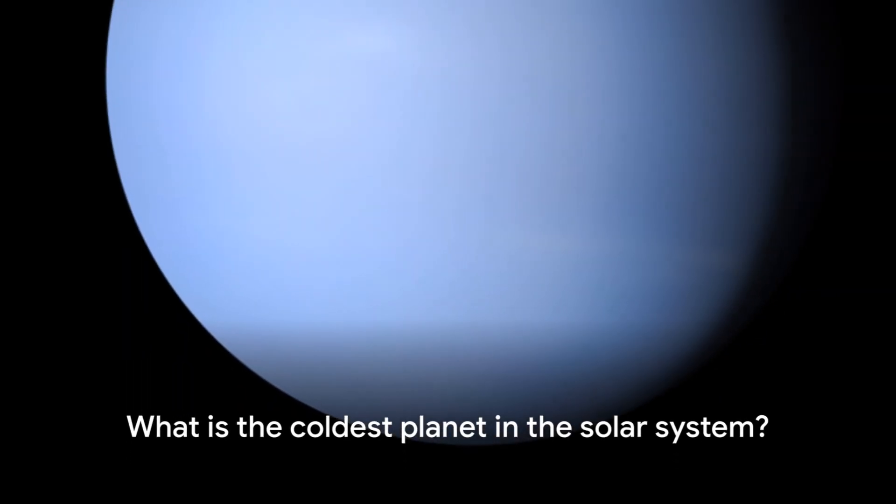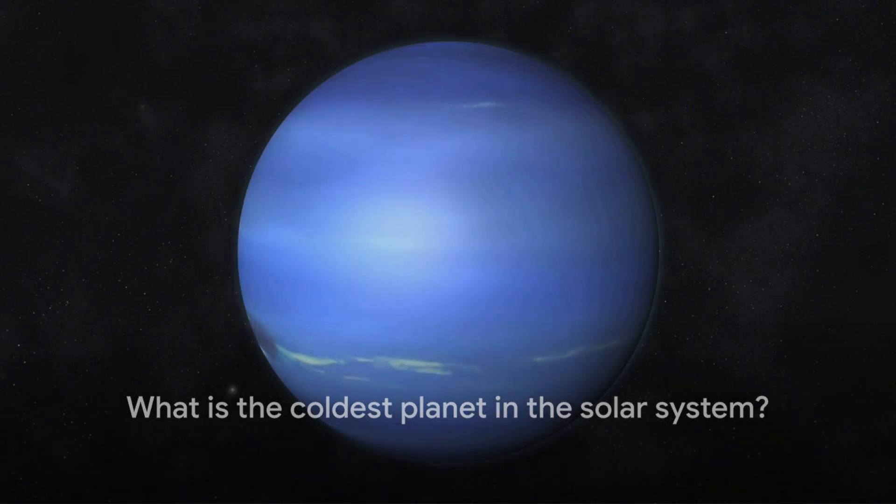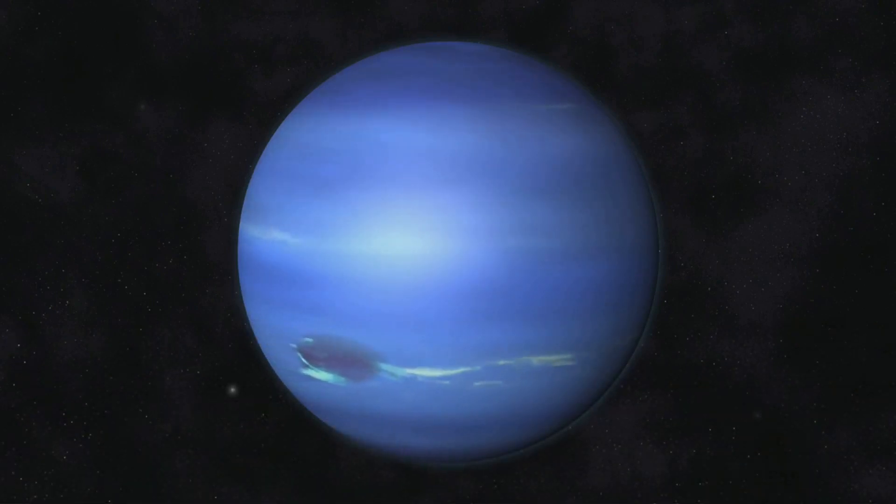Neptune is the coldest planet in the solar system, with temperatures dropping as low as minus 370 degrees Fahrenheit, minus 224 degrees Celsius. Its distance from the sun and its thick atmosphere contribute to its frigid temperatures.